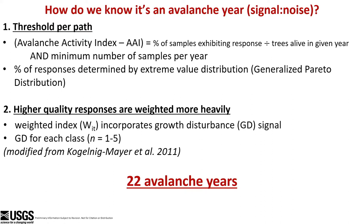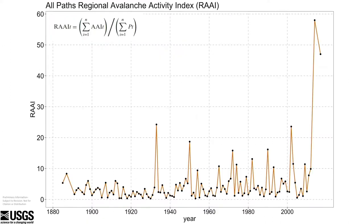By running these through this complex threshold analysis, we came up with 22 avalanche years from the 1650s up until now. It doesn't seem like very many years, but consider that we're talking about large magnitude avalanche cycles. One thing to consider is that this is a minimum number of years, because avalanches will destroy the very thing we're looking at to tell us if there are avalanches.